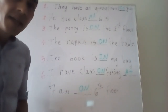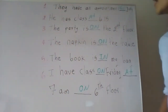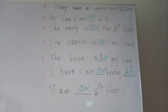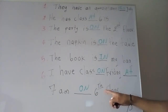Now let's practice pronunciation. Number one: They have an appointment in July. Number two: He has class at six — or you can say quarter past six. Number three: The party is on the second floor. Number four: The napkin is on the table. Number five: The book is in my bag. Number six: I have class on Friday at seven a.m. on the sixth floor — or on sixth floor.